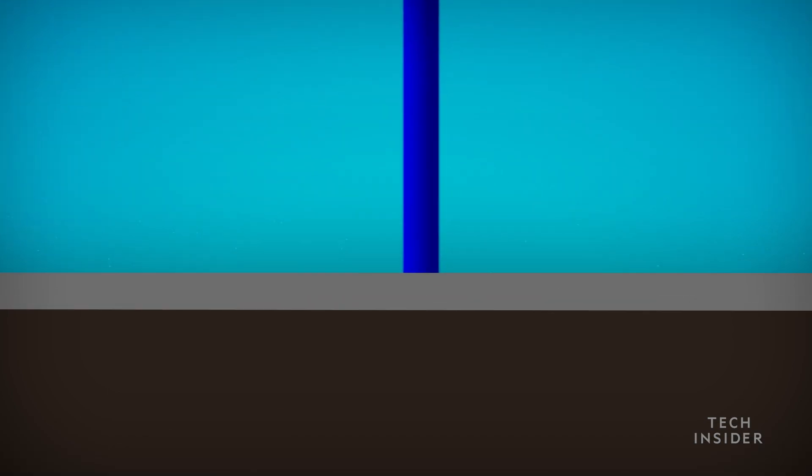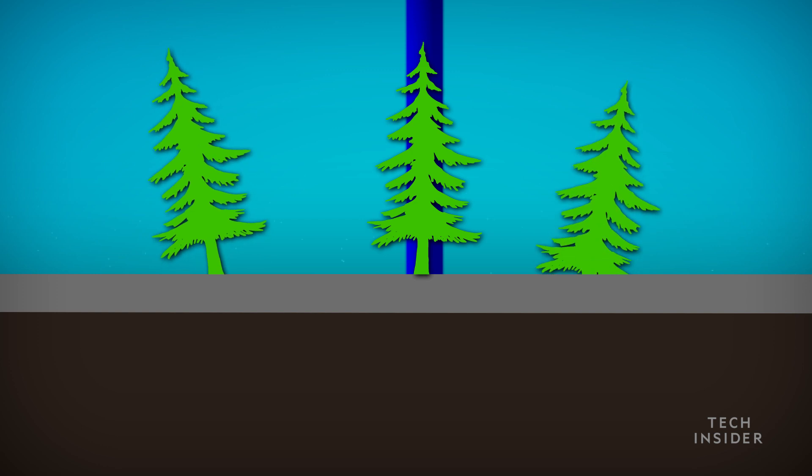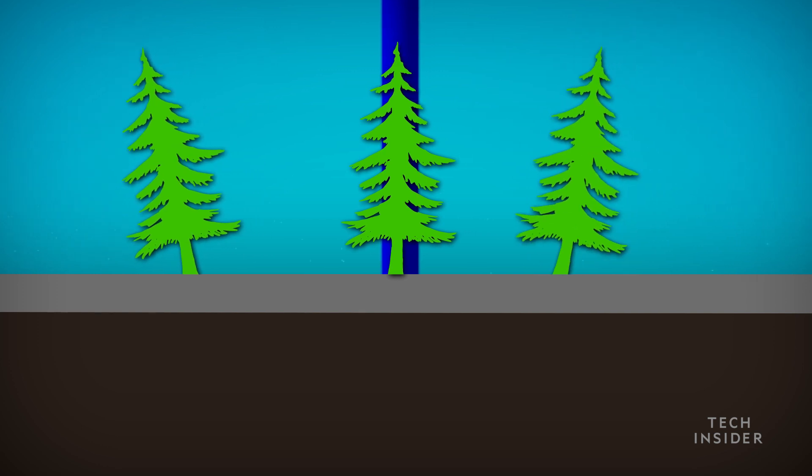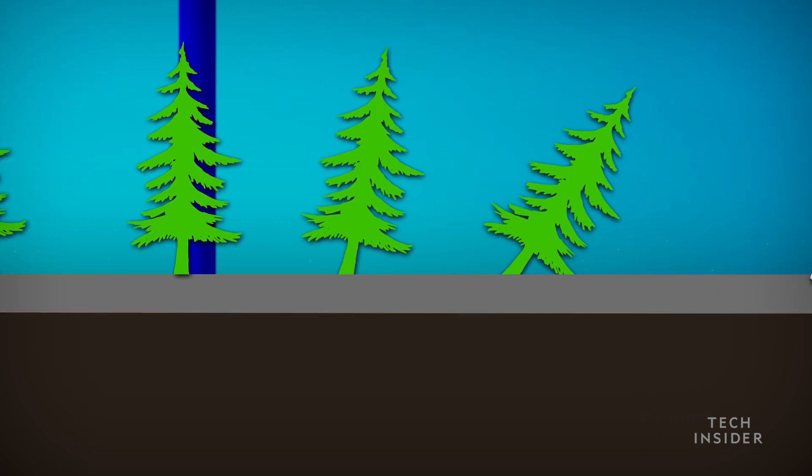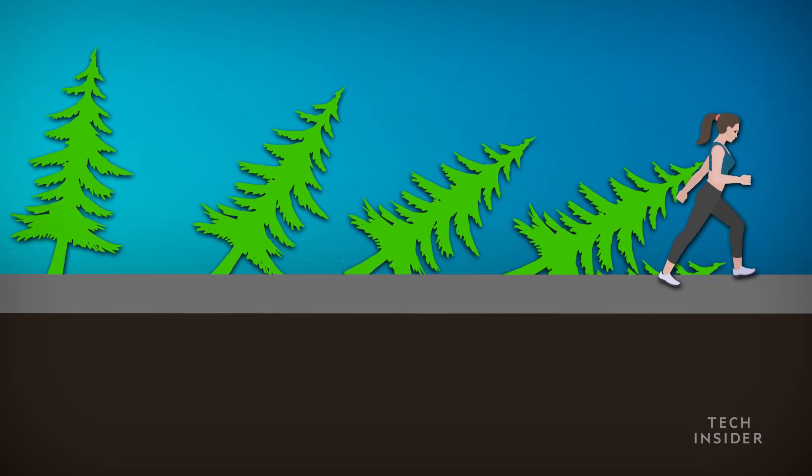But sports are just the beginning. Since plant stems grow opposite to the direction of gravity, an effect called negative gravitropism, you'll see forests grow at an increasingly sharp angle the farther you are from the center.